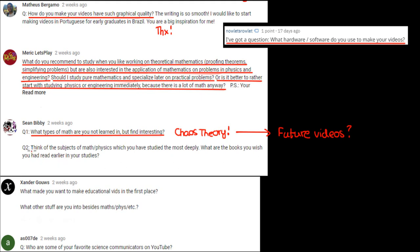Sean's second question asks, think of the subjects of math and physics which you've studied the most deeply. What are the books you wish you had read earlier in your studies? So one of the books that I wish I'd read earlier was Mathematical Methods in the Physical Sciences by Mary Boas. It covers a lot of advanced math concepts that I end up going over in my videos like complex variables, variational calculus, tensors, etc. And I wish I had it earlier because my undergraduate degree didn't really cover these concepts too well and I feel like I would have had a more complete education if I had this book beforehand and I didn't have to self-study all this later on.